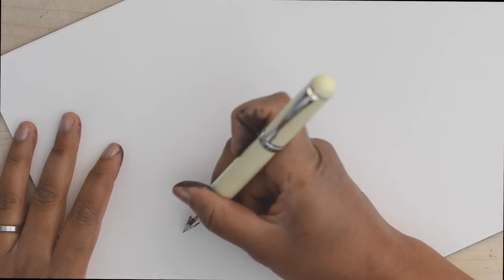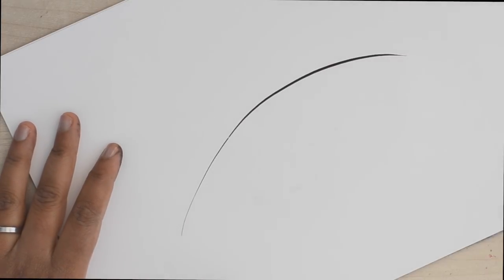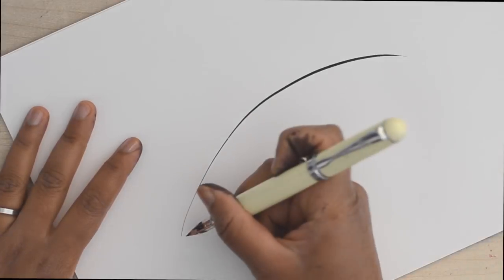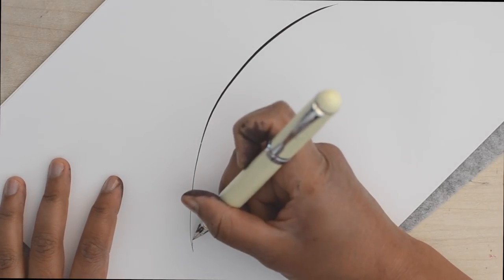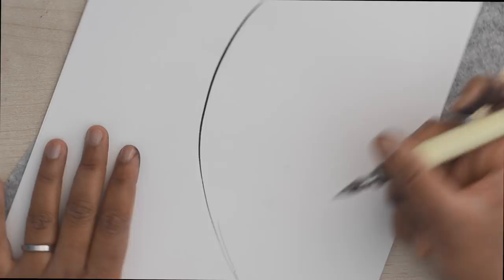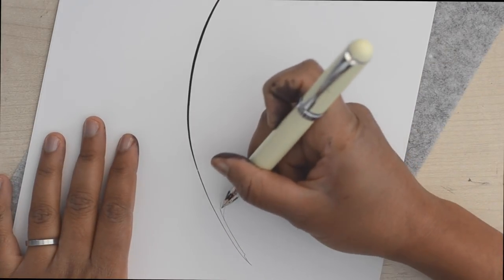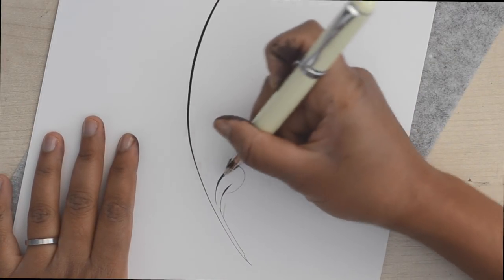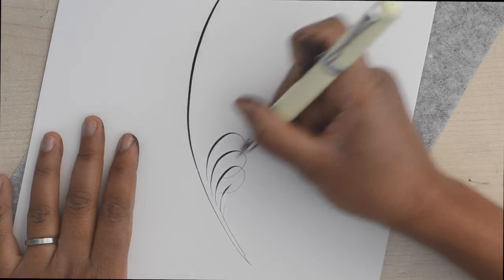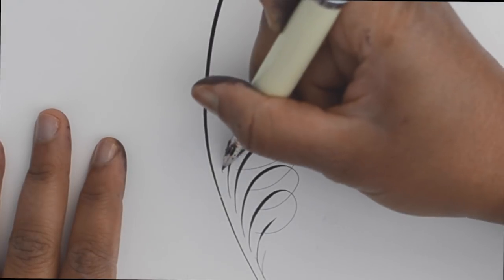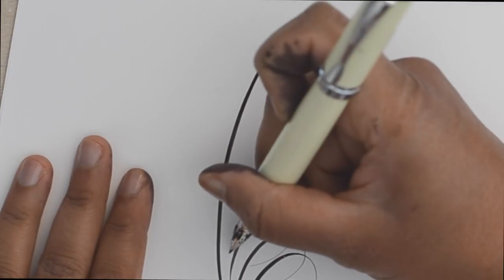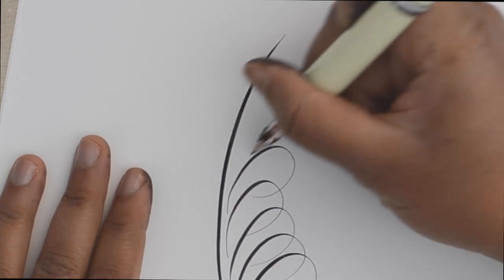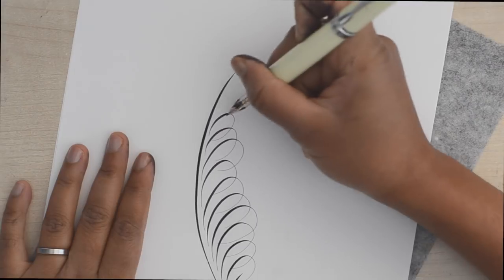So next I was keen to try offhand flourishing which is something I do with a straight holder anyway so I thought how cool would it be if I could just make these incredibly long thick black shades that you need for flourishing without ever having to dip. And to my surprise the pen actually performed really well. So as you can see the spine was just made in a thick long stroke you don't need to worry about re-dipping or if you're going to run out mid-stroke.